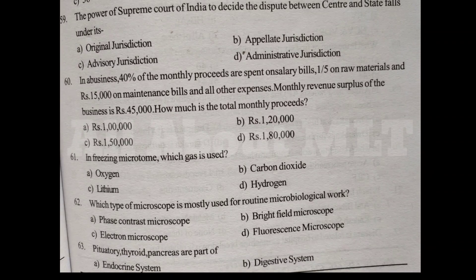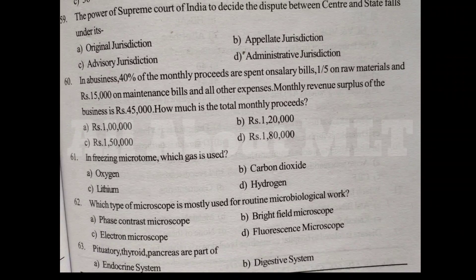In a business, 40% of the monthly proceeds are spent on salary bills, 1/5 on raw materials, and Rs. 15,000 on maintenance bill and other expenses. Monthly revenue surplus of the business is Rs. 45,000. How much is the total monthly proceeds? Option A Rs. 1,00,000, Option B Rs. 1,20,000, Option C Rs. 1,50,000, Option D Rs. 1,80,000. Answer is Option C Rs. 1,50,000.